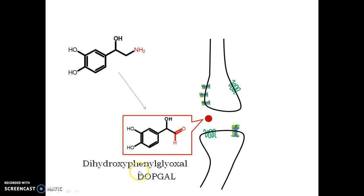The derivative is called dihydrophenylglyoxal, commonly called DOPGAL. This DOPGAL has no longer any affinity with the receptor and hence is dislodged from the receptor, culminating the effect of norepinephrine.